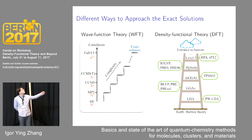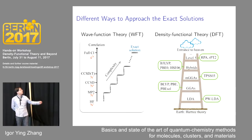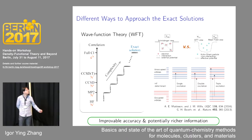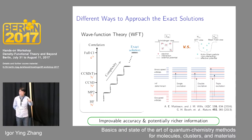Quantum chemistry methods are rooted in wave function theory. Unlike DFT, they provide a systematic way to approach the exact solution. Many-body perturbation approaches and coupled cluster approaches are two widely used strategies in quantum chemistry. Unlike DFT, wave function-based methods go beyond the mean-field approximation and take electron-electron interactions into account explicitly in the wave function expansion. Therefore, their improvable accuracy and potentially richer information makes quantum chemistry methods very promising for critical cases in computational material science, for example strongly correlation-driven transition metal oxides.